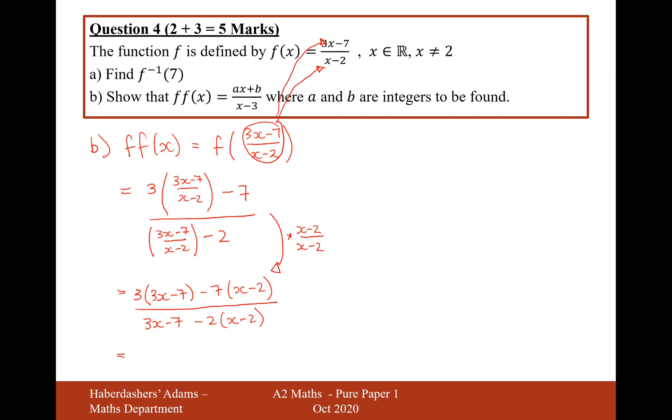Let's now expand and simplify. It's going to be 9x minus 21 minus 7x and then double negative plus the 14 over 3x minus 7 minus 2x. And then minus 2 times minus 2 will be plus 4.